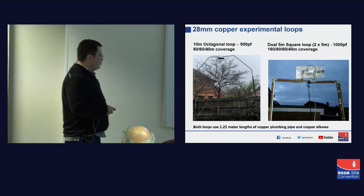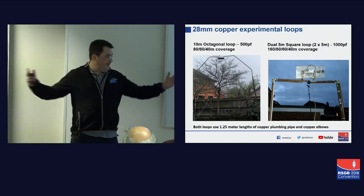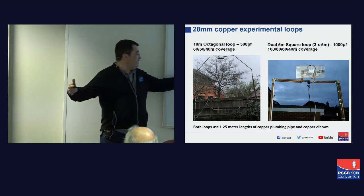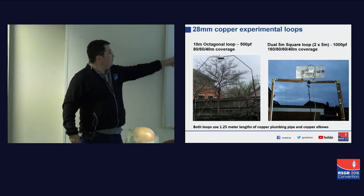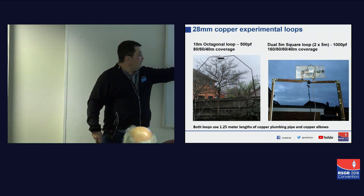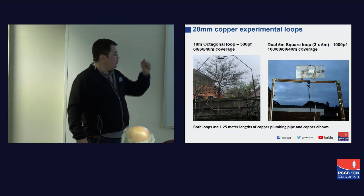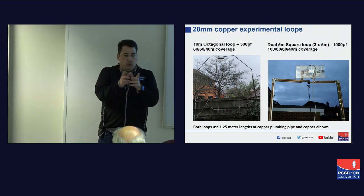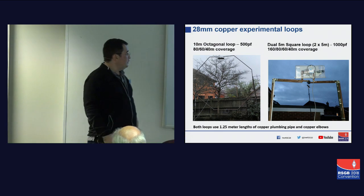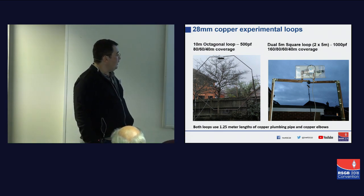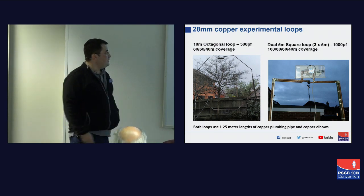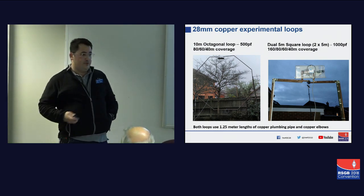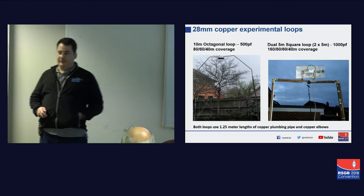Both loops have been constructed using 1.25-meter lengths of copper piping. By using eight sections to create the 10-meter octagonal, whereas the loop on the right-hand side is a dual loop — two five-meter loops next to one another, more than a diameter apart, using PVC piping to separate. I'm feeding it from the top, the capacitor's at the top, and I've got a shroud because it was an experimental loop — a little bit of weatherproofing.